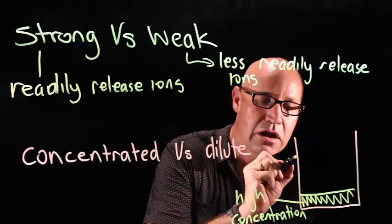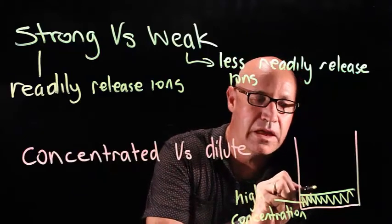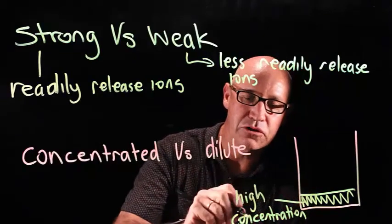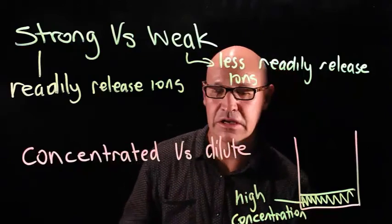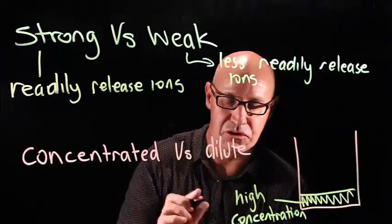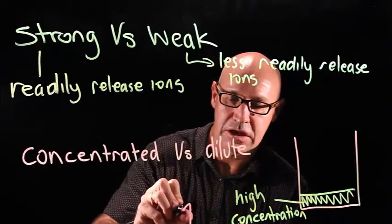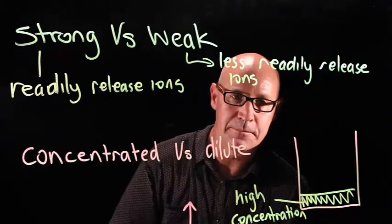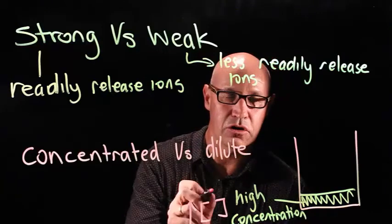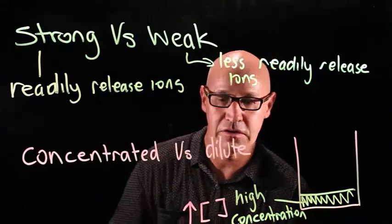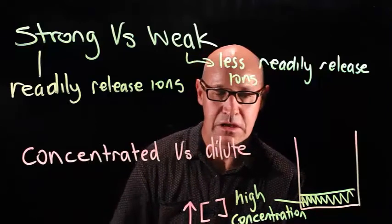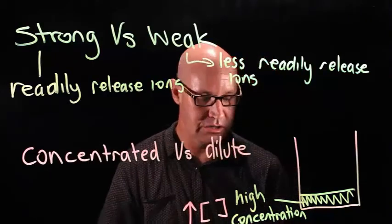So that means there are lots of cordial molecules and not much water. Another way that we can draw this — and I want you to get used to this way of drawing it — is using a square bracket, which means concentration. You'll use that more and more in chemistry and also in biology. So that represents a high concentration.